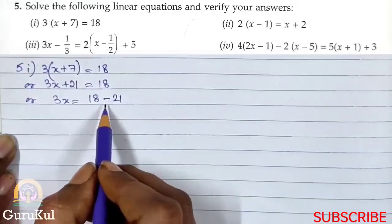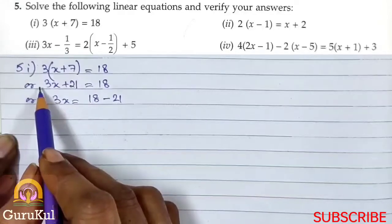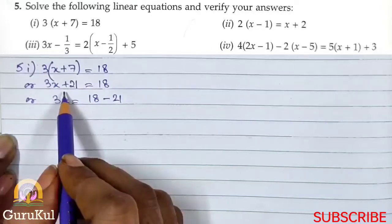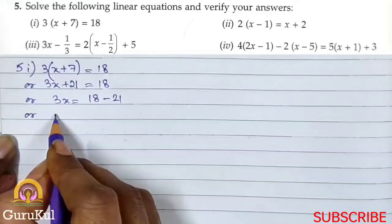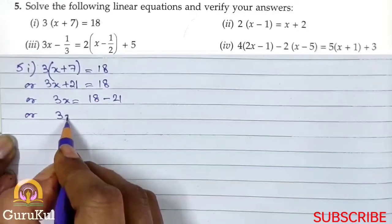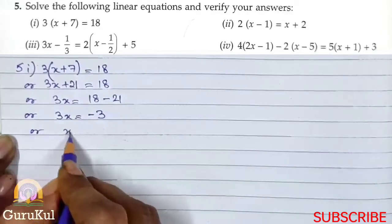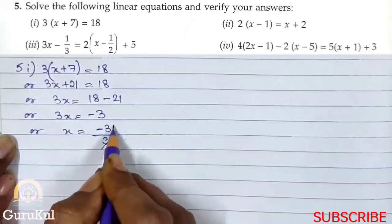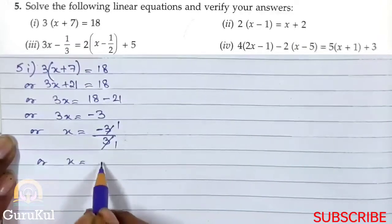Now this becomes 21 minus 18, because when we move terms from left hand side to right hand side, the sign reverses. So 3x is equal to minus 3, and dividing both sides by 3 — 3 and 3 get cancelled — and x is equal to minus 1.